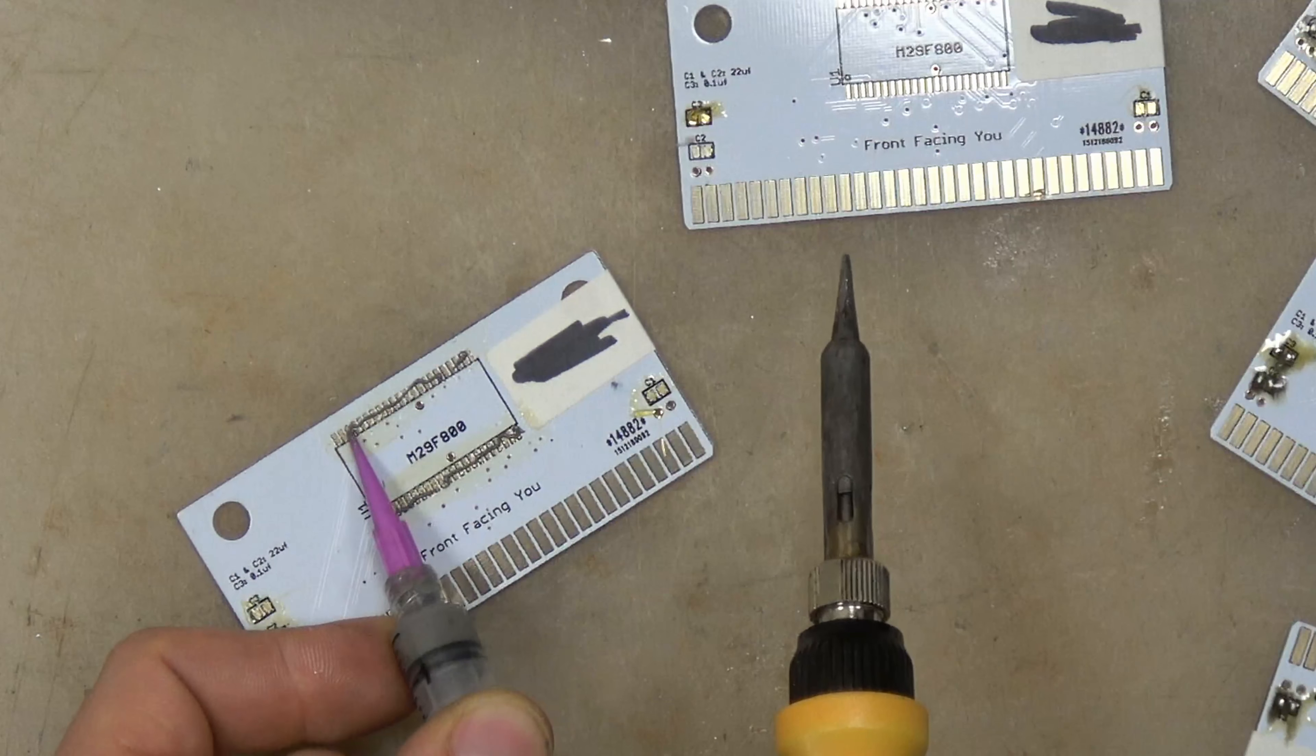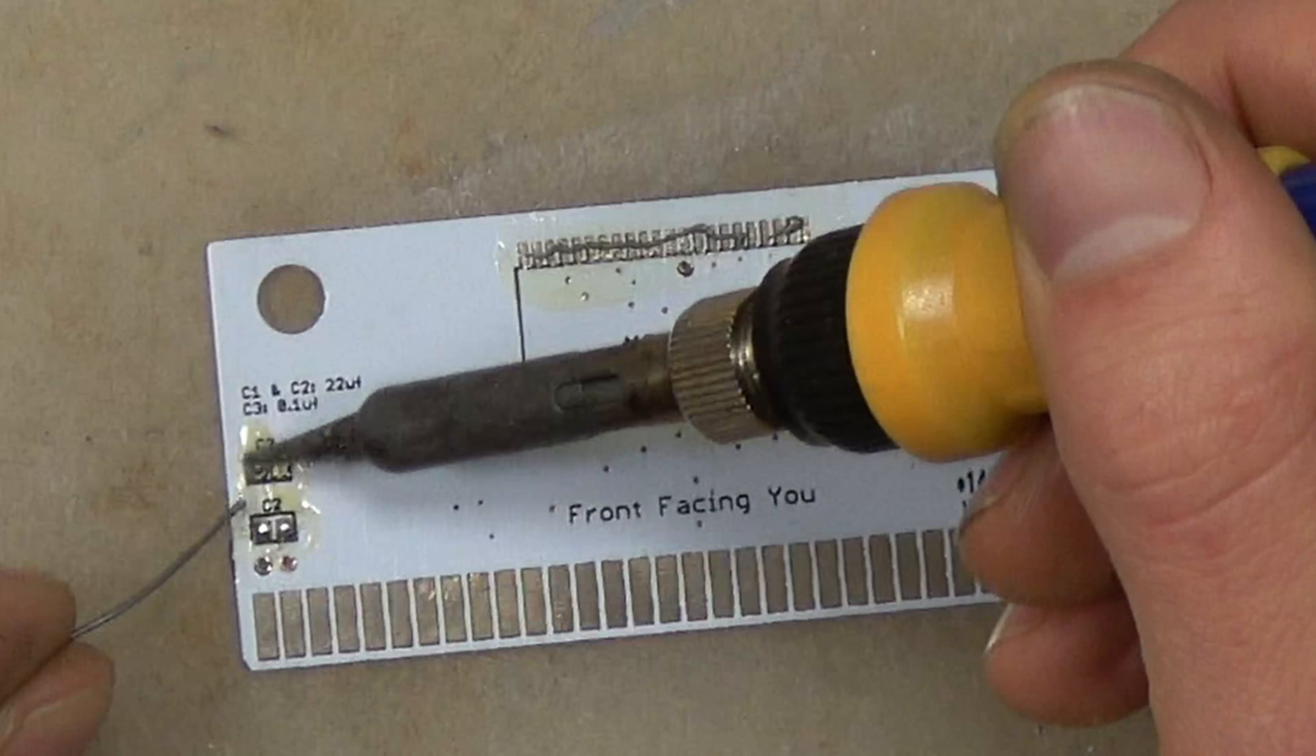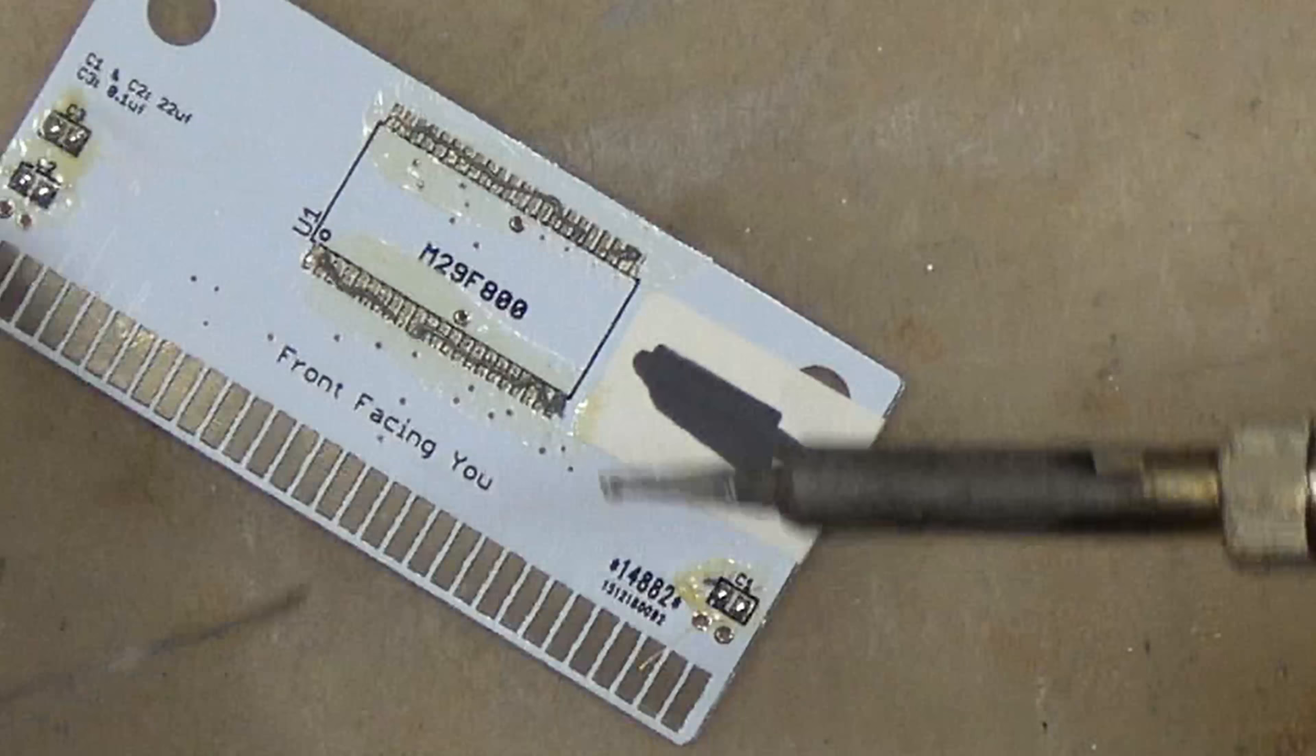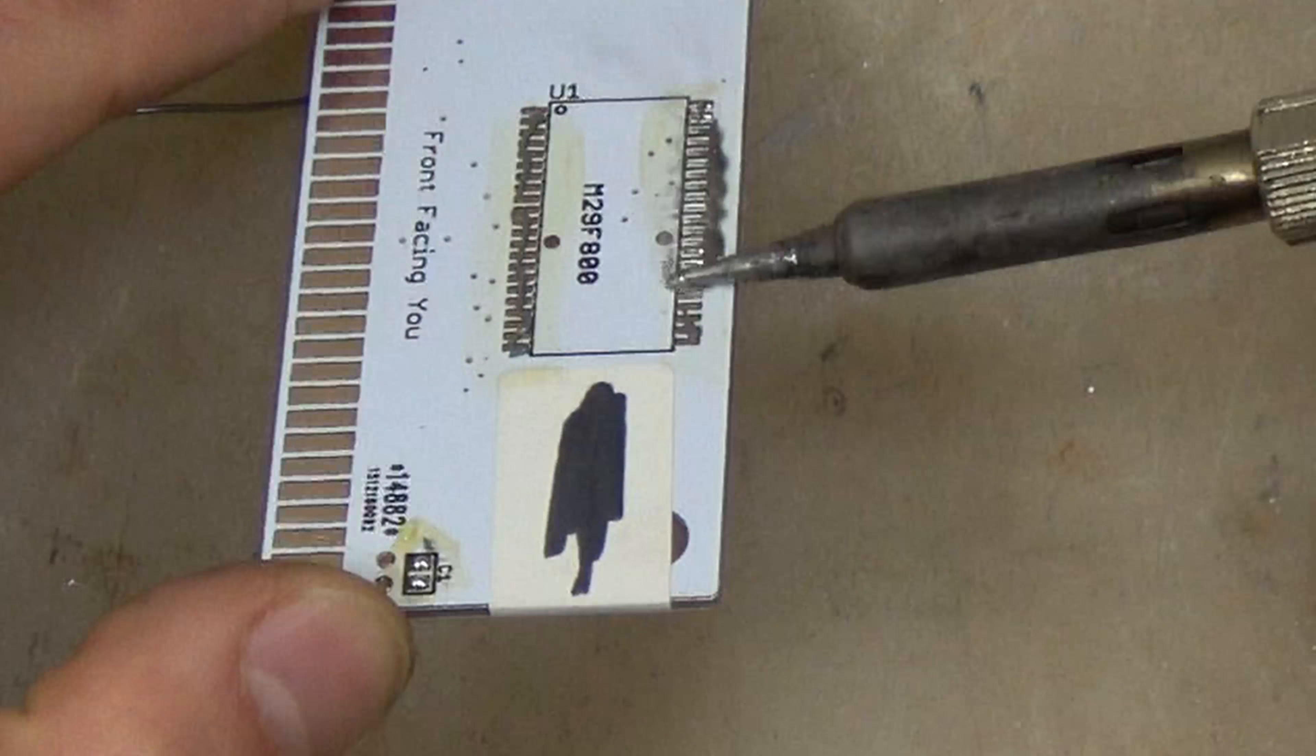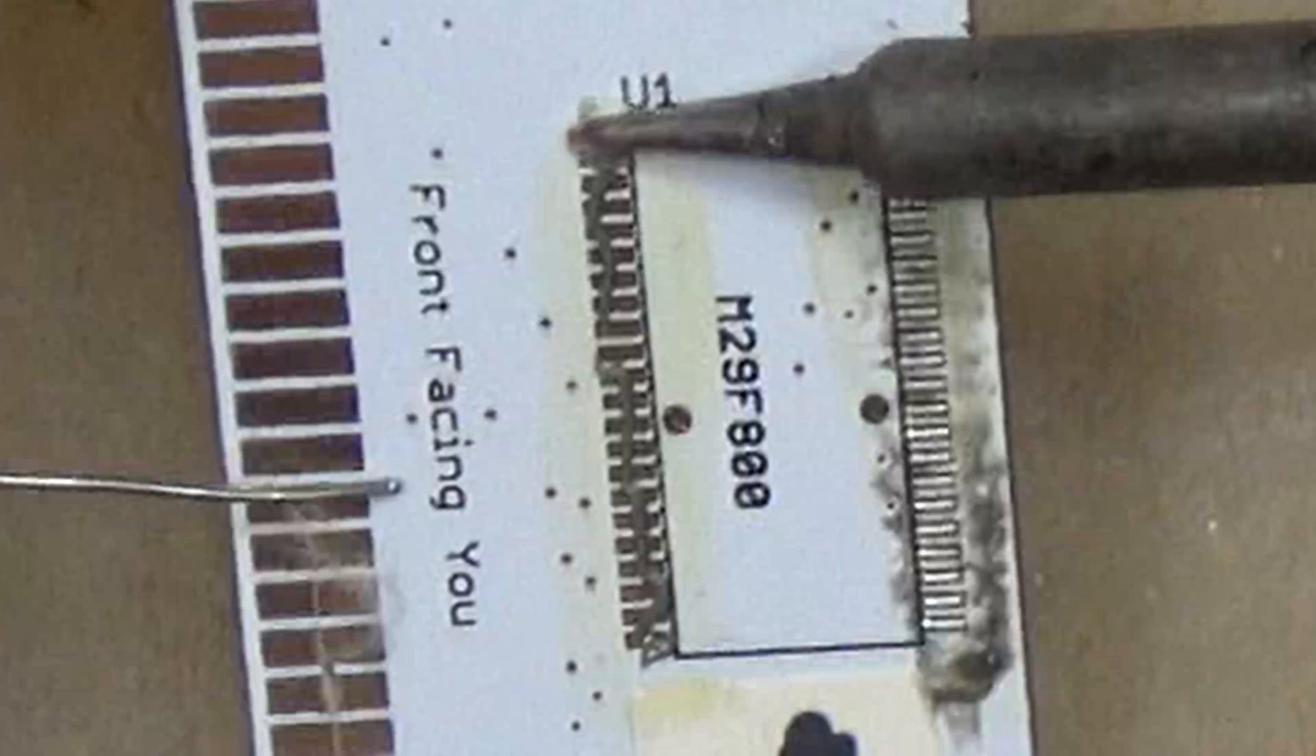I'm just applying the solder paste across in a line over the flux of the chip points. For the capacitors, the pads are a little bit bigger so I can just use regular solder. It's very important to only put a tiny bit of solder. Then for the chip pads we're just gonna run our iron using the bigger tip, tinning each one perfectly.